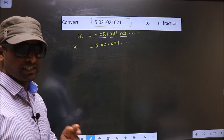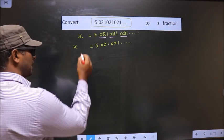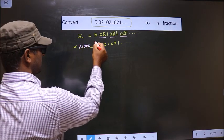Whenever three numbers are being repeated, you should multiply by 1000 on both sides.